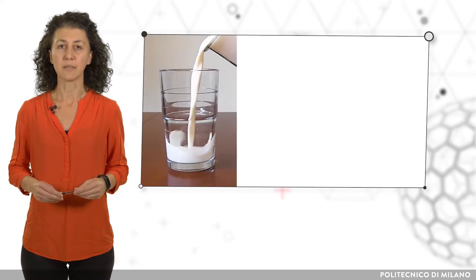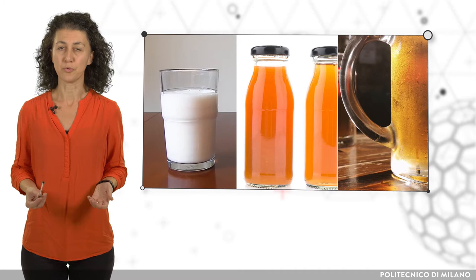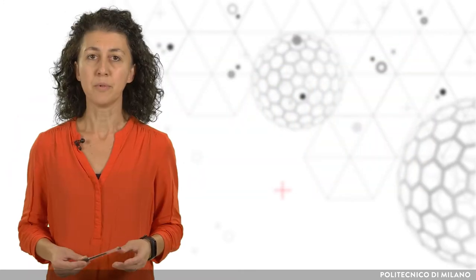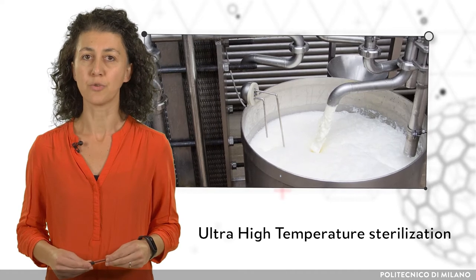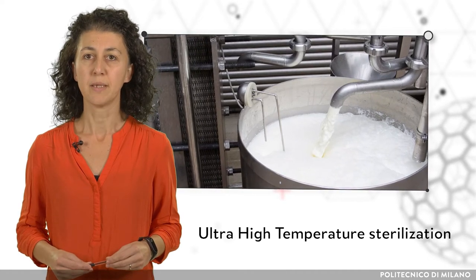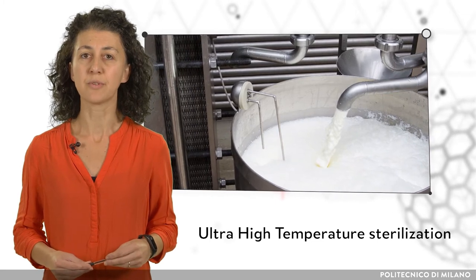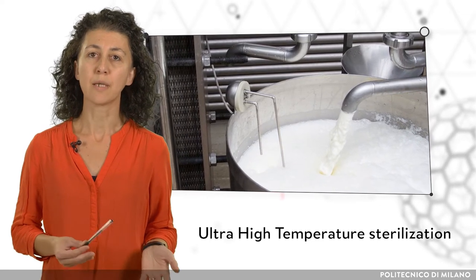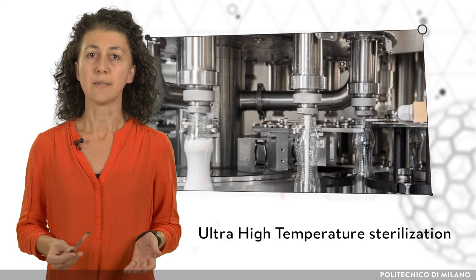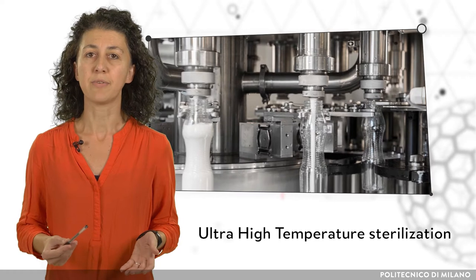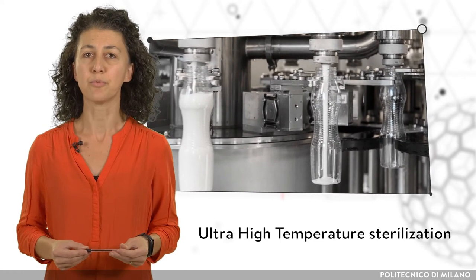Food products such as milk, juices, beer and so on need to be treated before consuming. As an example, milk can undergo ultra-high temperature sterilization, called UHT. Milk is heated above 135 degrees Celsius, the temperature required to kill spores, for 1 to 2 seconds. Then, if the milk is packed in a sterile container, its shelf life increases from about 7 days up to 9 months.